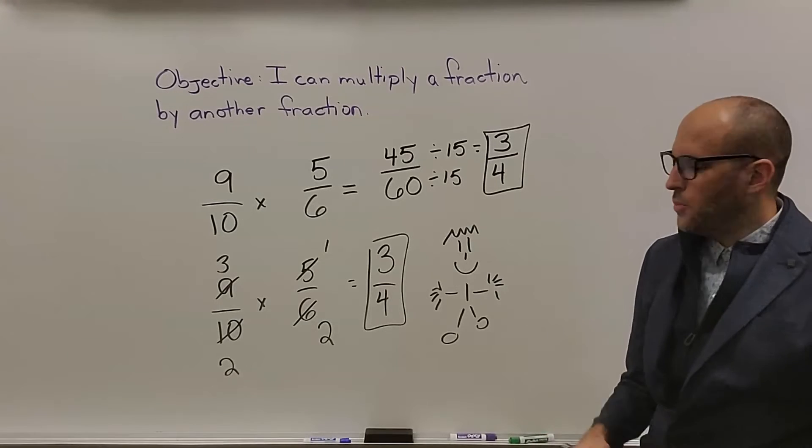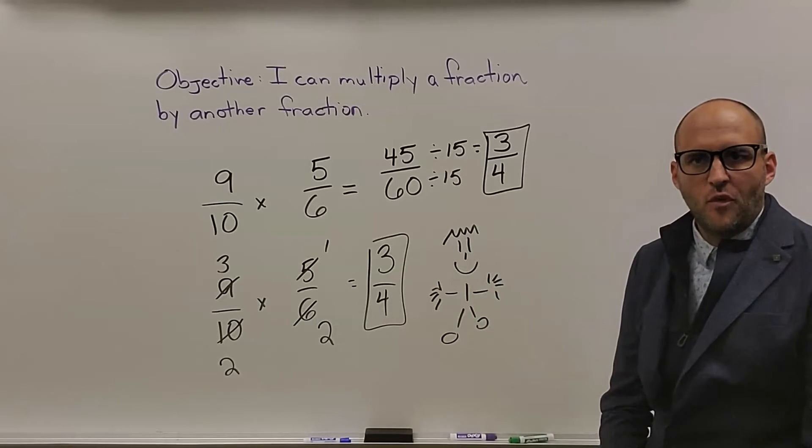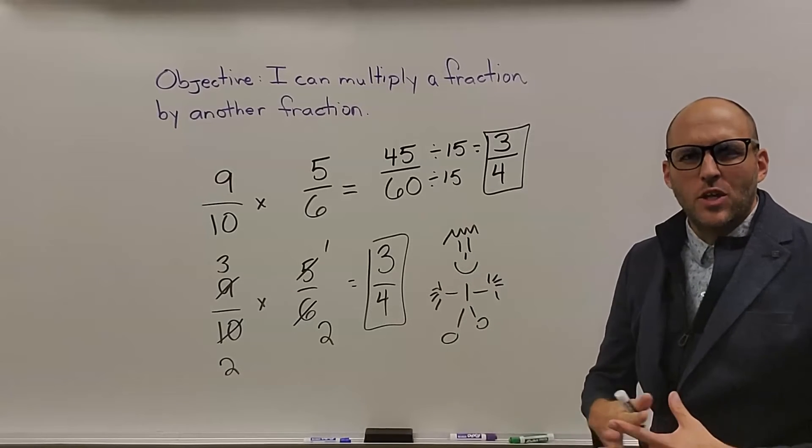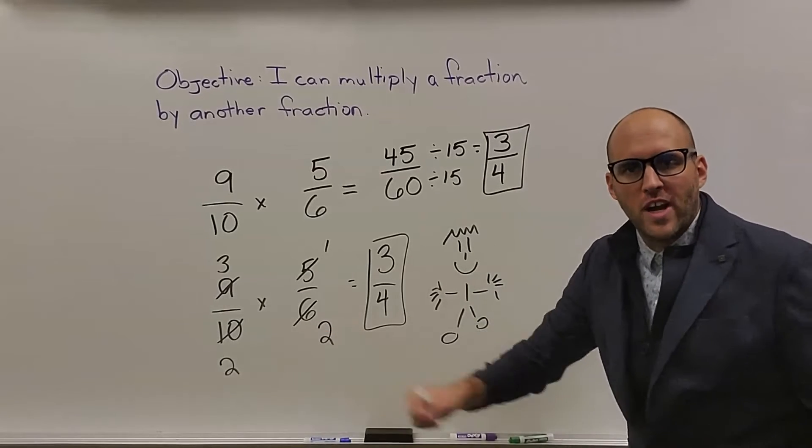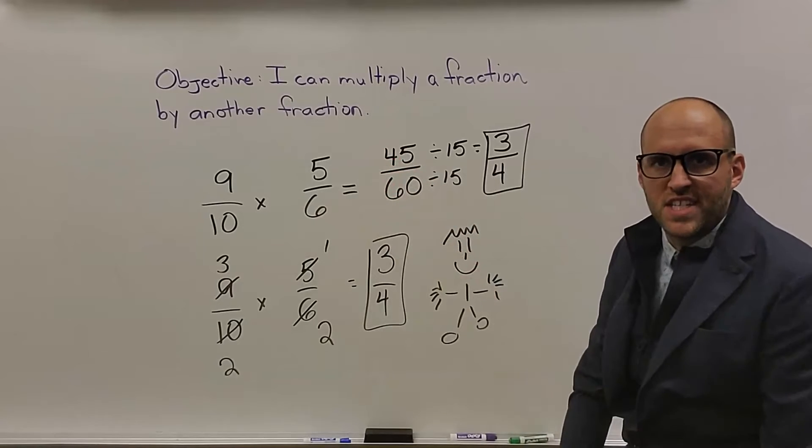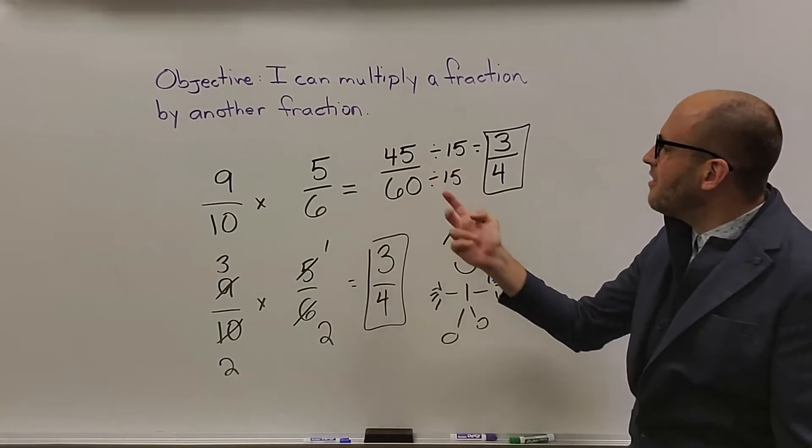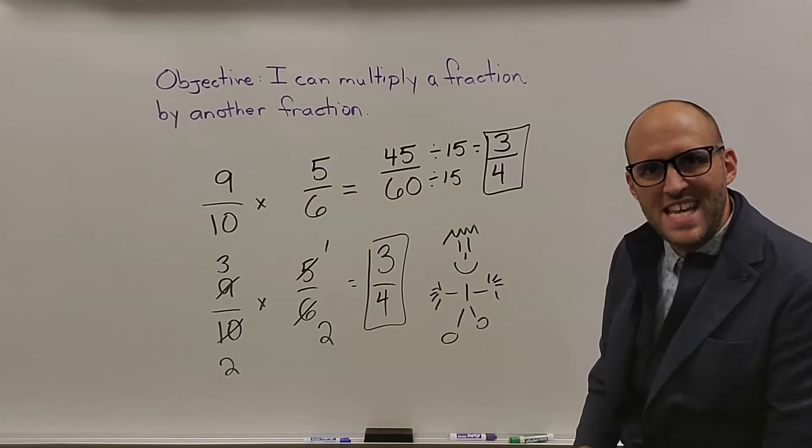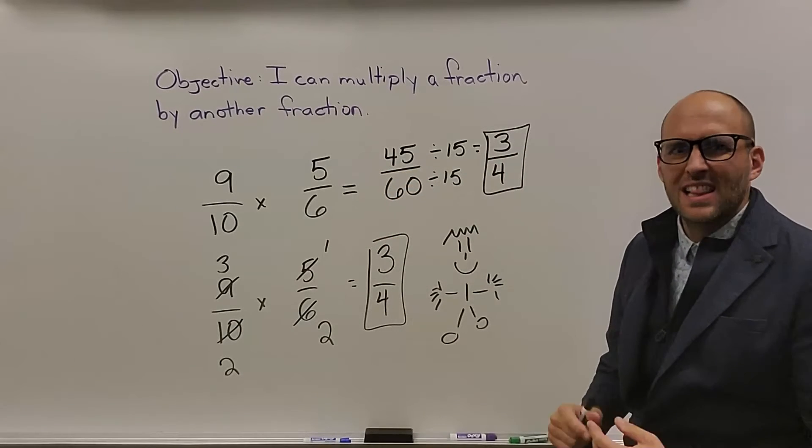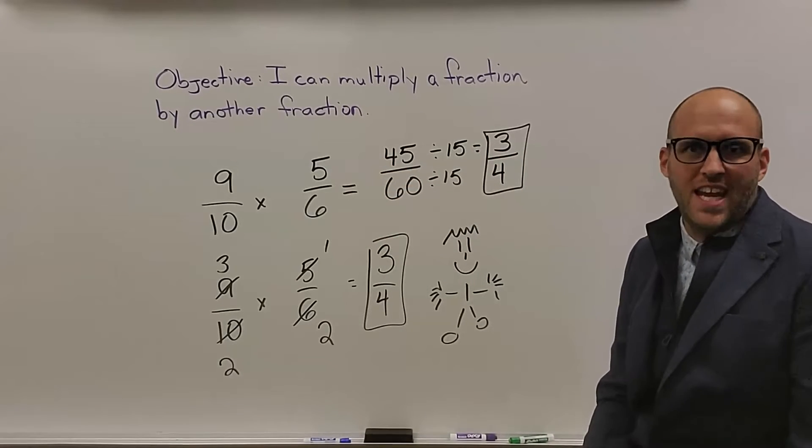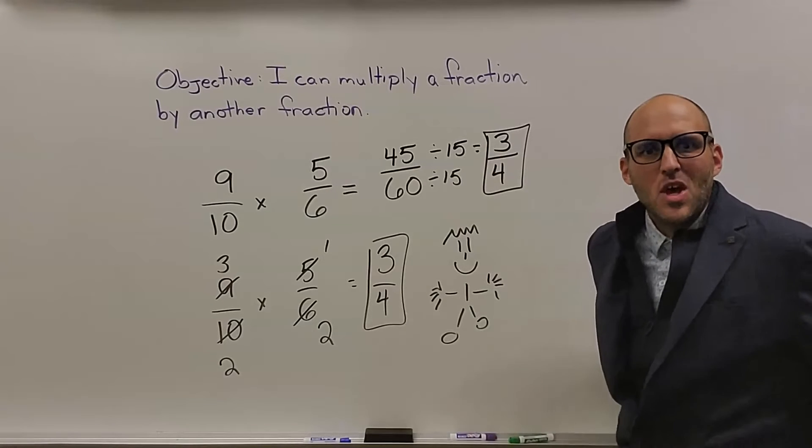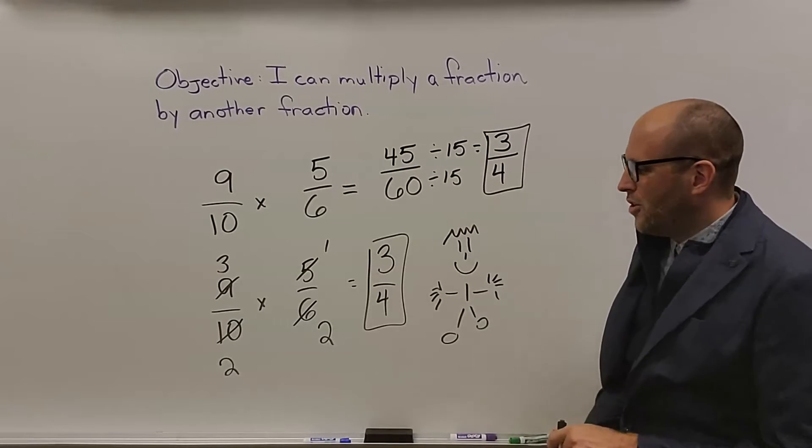Well, mathematicians, you should have ended up with 3/4 for your answer. Now, hopefully this kind of shows you why you want to try to simplify beforehand. Because if you just multiplied through, you ended up with 45 over 60, which means you would have had to figure out that you had to divide by 15 into 45 and 60 to end up with 3/4. A lot of kids don't really get up to 15 in their fingers and toes and all that stuff when they're trying to divide. The number's too big, which is why you want to simplify beforehand.